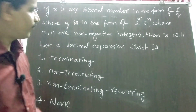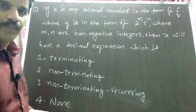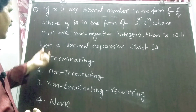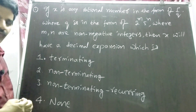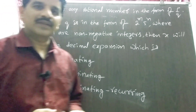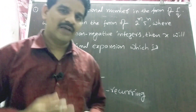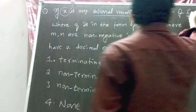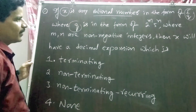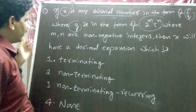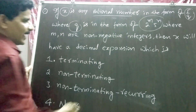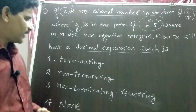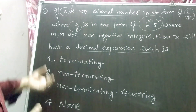From Real Numbers, question 1: if X is any rational number in the form of P by Q, where Q is in the form of 2^m × 5^n, where m and n are non-negative integers, then X will have a decimal expansion which is... The fundamental theorem of arithmetic is very important. Based on that, we have one or two questions in each polytechnic exam. Rational numbers can be terminating or non-terminating.